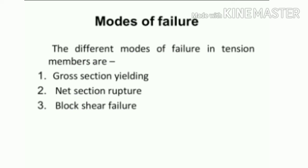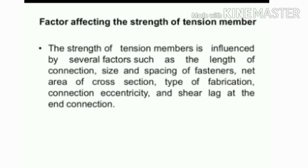The design strength of a tension member is explained in IS 800:2007 on pages 32 and 33. After calculating these values, we select the minimum value. The factors affecting the strength of a tension member include: length of connection, effective length of welding, size and spacing of fasteners, net area of cross section, type of fabrication connection, eccentricity, and shear lag at the end connection. Thank you for watching.